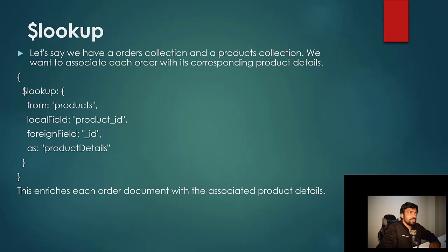'As' is the name of the field where you want to map the foreign collection data in your result set. As an example, if you have an orders collection and a products collection and you want to associate product details for each order, you can have a lookup stage on the orders collection which looks up on the products collection using local field 'product_id' and foreign field '_id' of the products collection. The result would be embedded in your result set with the field name 'product_details'.